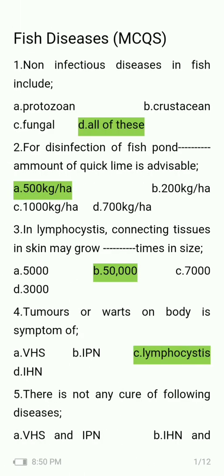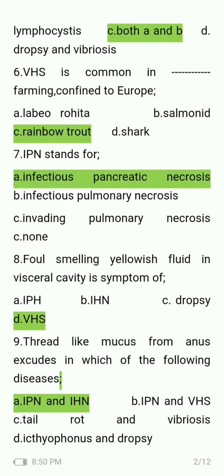VHS is common in which fish, confined to Europe — Labeo rohita, salmonids, or rainbow trout? The answer is rainbow trout. IPN stands for infectious pancreatic necrosis, infectious pulmonary necrosis, invading pulmonary necrosis, or none? The answer is infectious pancreatic necrosis.